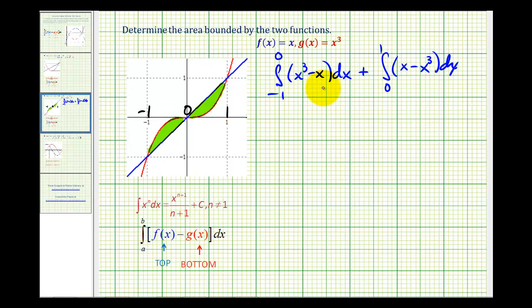So here we'll have x to the fourth divided by four minus x squared divided by two. We'll evaluate this at zero and negative one. And here we'll have x squared divided by two minus x to the fourth divided by four. We'll evaluate this at one and zero.